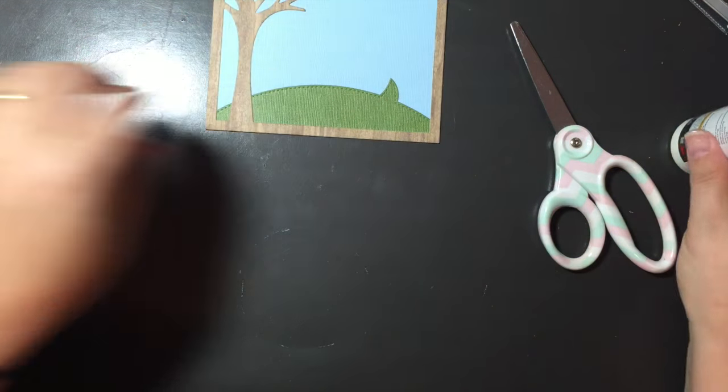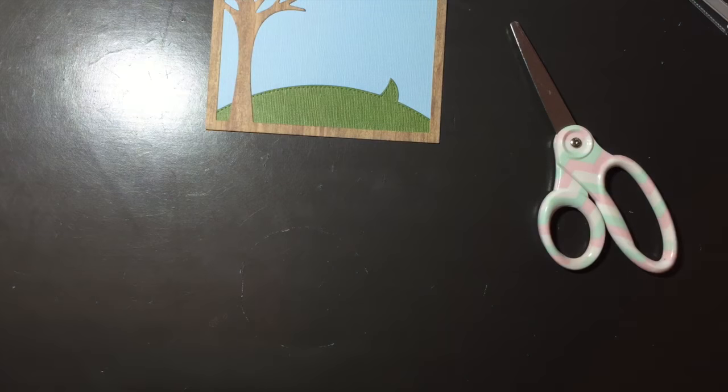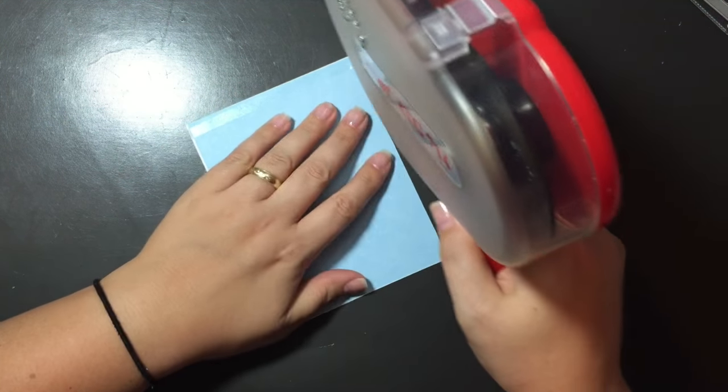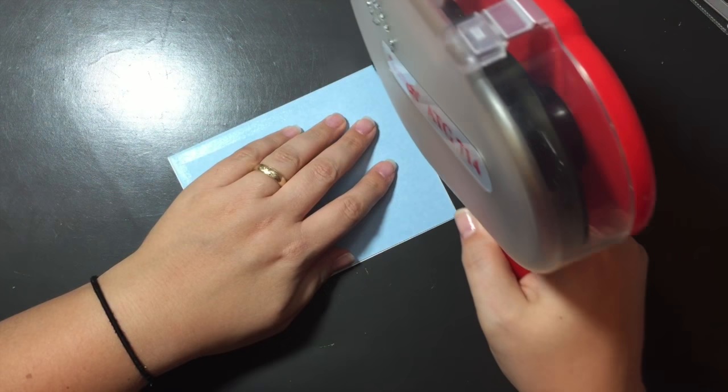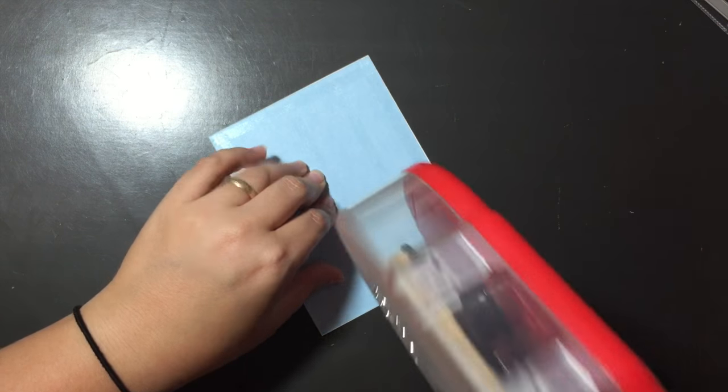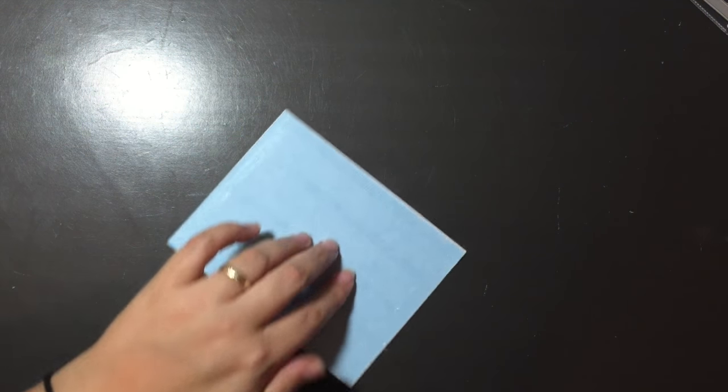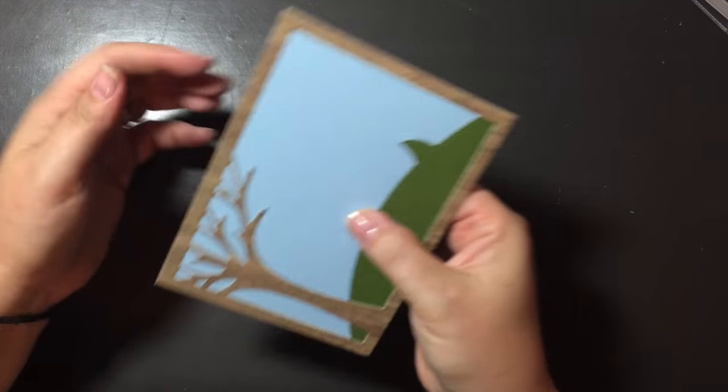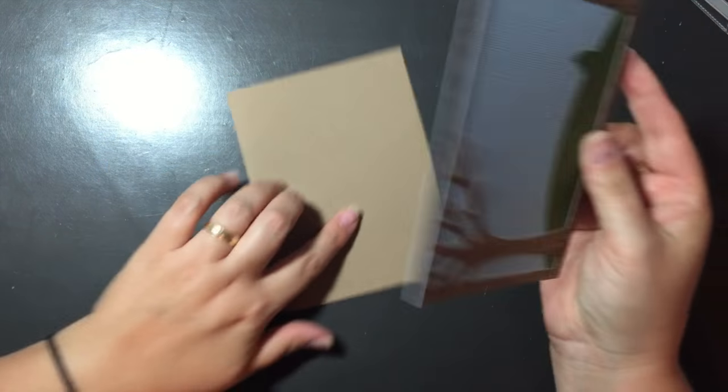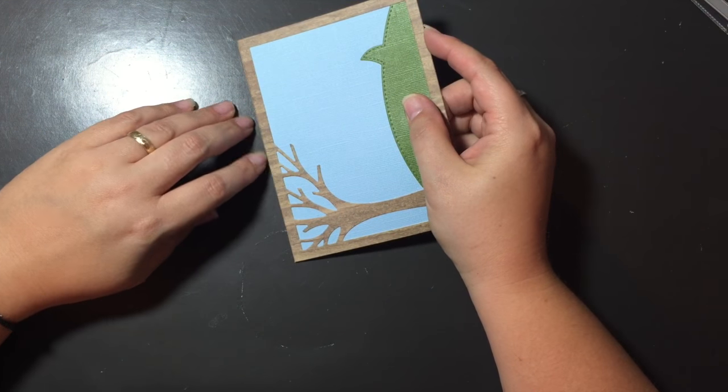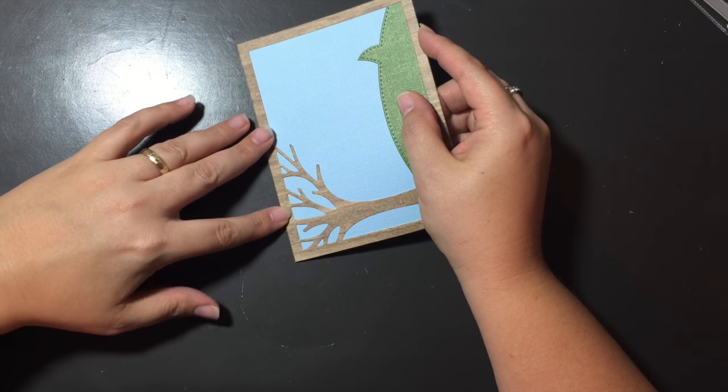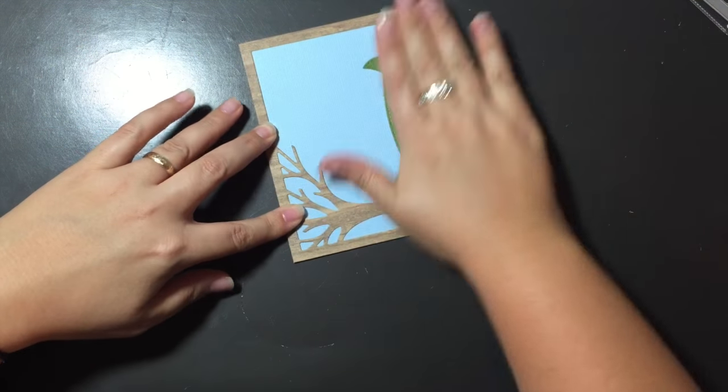And then I'm going to take my ATG gun and go around the edges. Just do a couple across. And then I'm going to take my card and make sure I have my fold at the top. And just line up the top corners. And place it down.